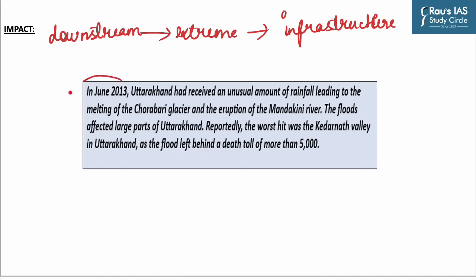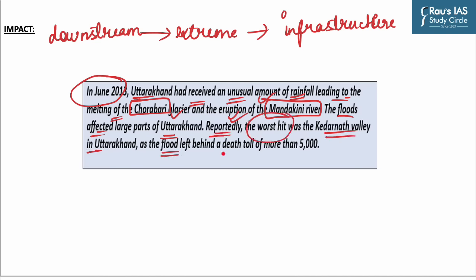As seen in June 2013, Uttarakhand received an unusual amount of rainfall, leading to the melting of the Chorabari Glacier and the eruption of the Mandakini River. The floods affected large parts of Uttarakhand; the worst hit was the Kedarnath Valley, where the flood left behind a death toll of more than 5,000.